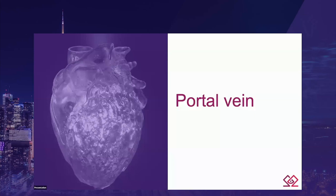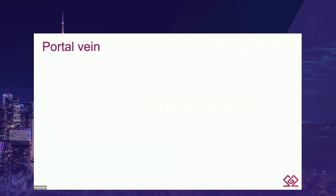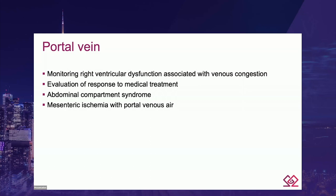Now let's talk about the portal vein. Starting from the IVC view, the right portal vein can often be viewed at an angle between 50 to 70 degrees with minor manipulation. The portal vein can be identified by its echogenicity and a typical laminar or monophasic velocity between 15 and 30 cm/s. Portal vein imaging has many applications: monitoring RV dysfunction associated with venous congestion, evaluation of response to medical treatment, abdominal compartment syndrome, mesenteric ischemia with portal venous gas, and hepatic artery and portal vein stenosis in liver transplantation.